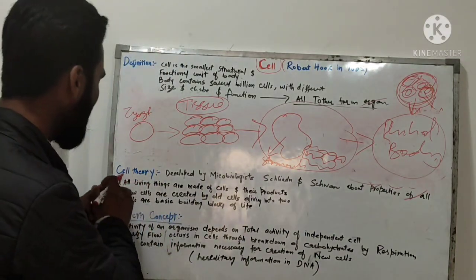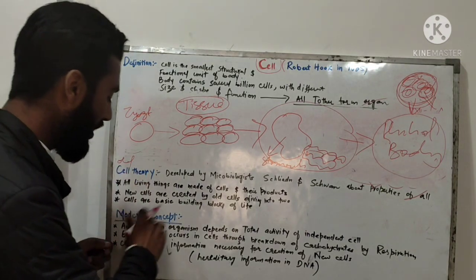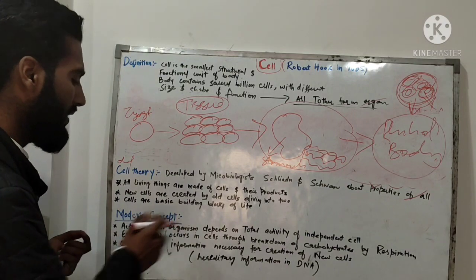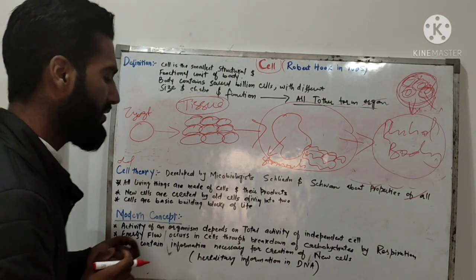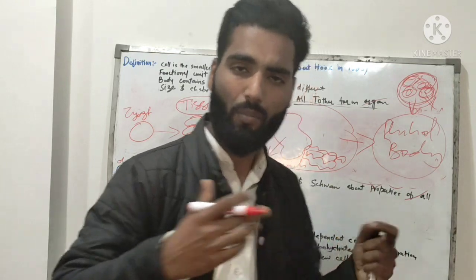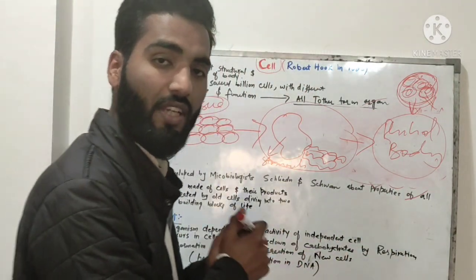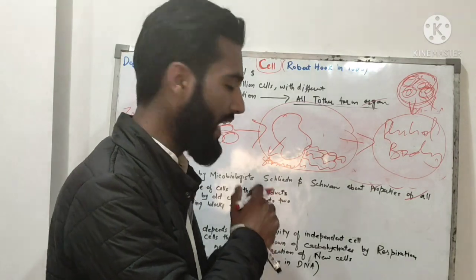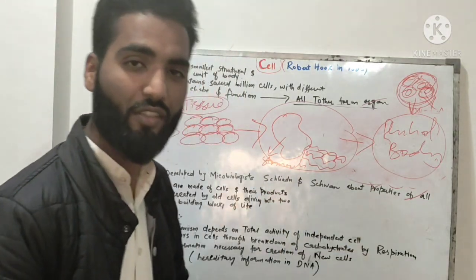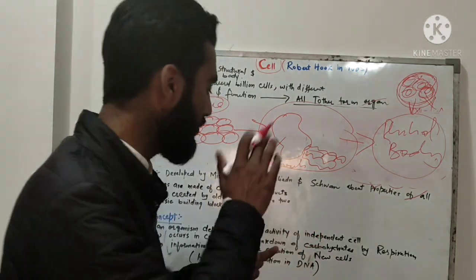Now, the modern concept. It was an old concept before. The modern concept states: the activity of an organism depends on the total activity of its independent cells. Our body's overall activity is dependent on the independent activity of its individual cells.